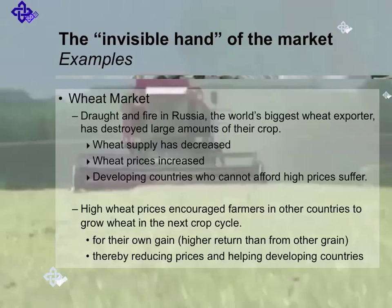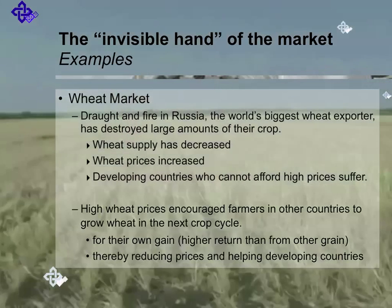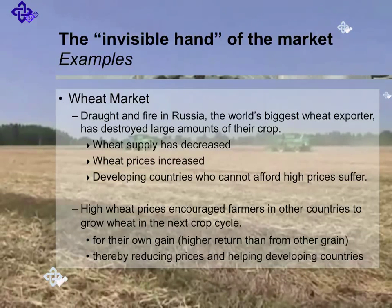For another example, consider the wheat market case study. A fire in Russia — the world's biggest wheat exporter — has destroyed large amounts of their crop. Wheat supply has decreased and wheat prices have increased, so developing countries who cannot afford higher prices will suffer. But high wheat prices encourage farmers in other countries to grow wheat in the next crop cycle for their own gain, because they see the higher return from wheat over other grain. And thereby they produce more, increase supply, reduce prices, and help developing countries.